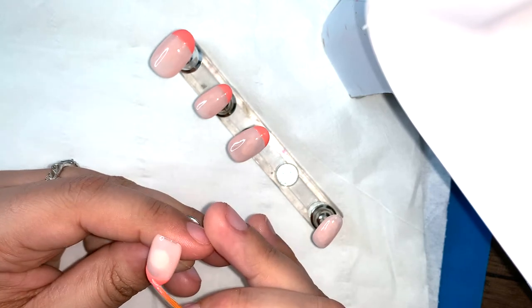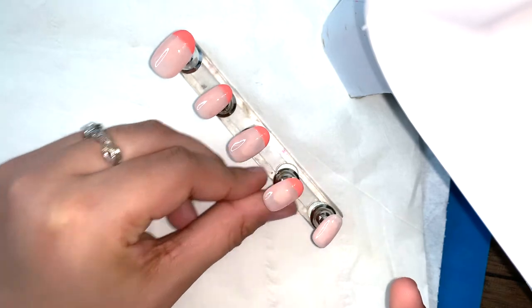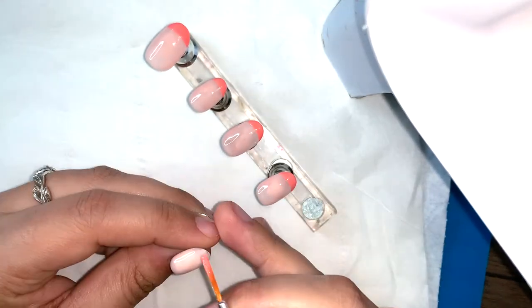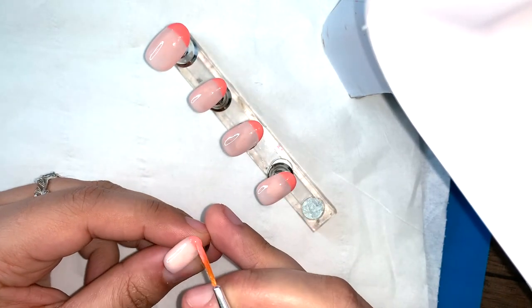Each time I pick up just enough product on the brush to do one layer of the line, because you don't want the French tip too bulky.